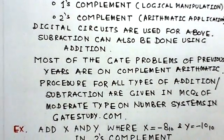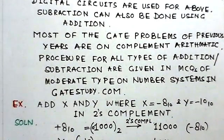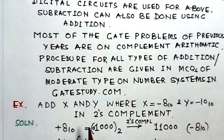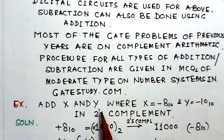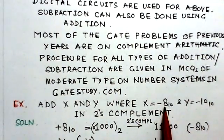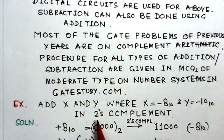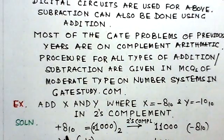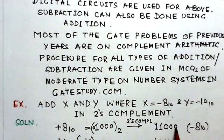An example: add x and y where x = −8 decimal and y = −10 decimal, to be added in two's complement form. Solution: 8 decimal in binary is 01000; two's complement gives 11000. For y = 10 decimal in binary is 01010; two's complement of −10 gives 10110.